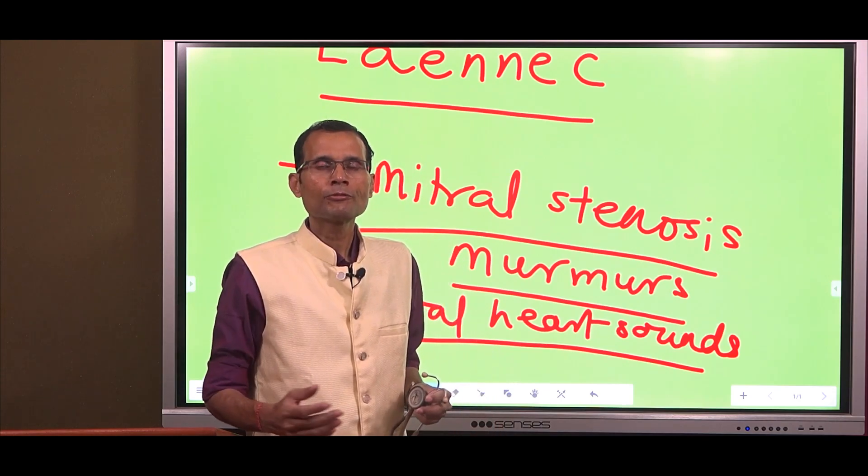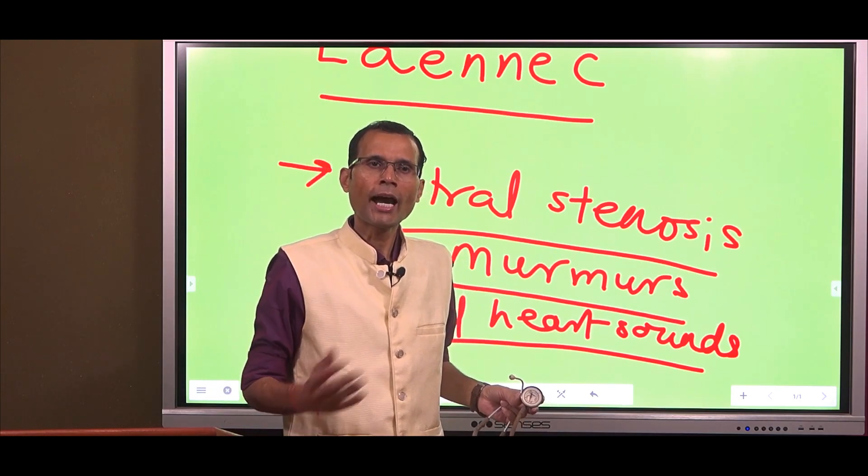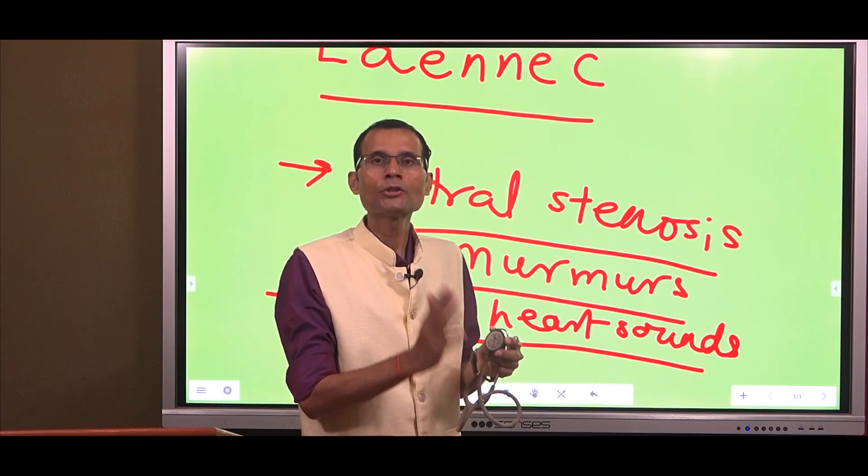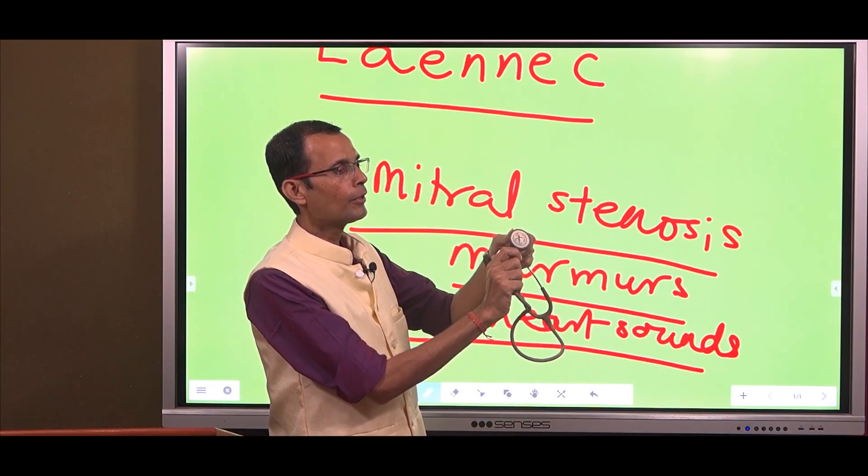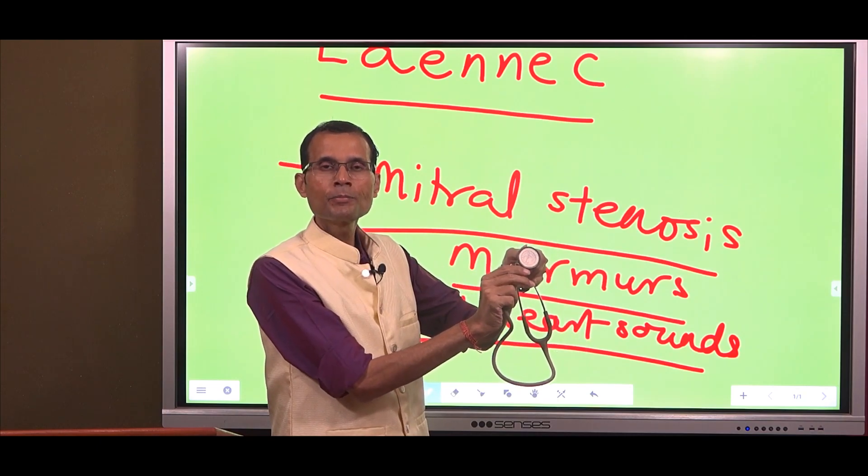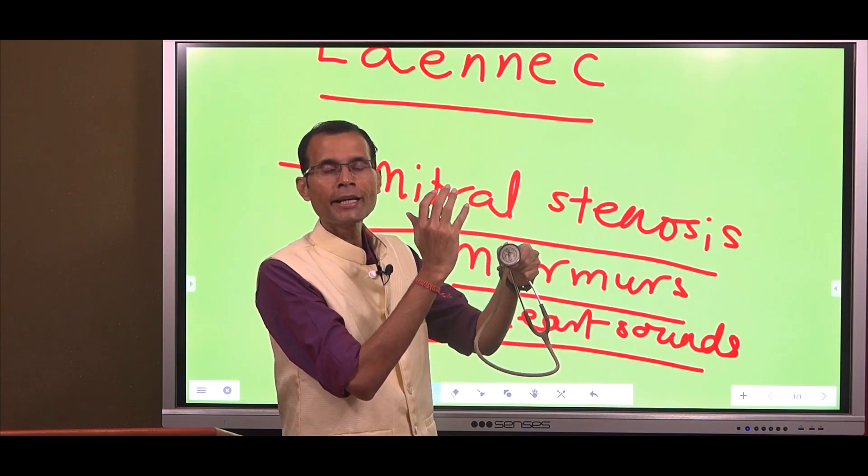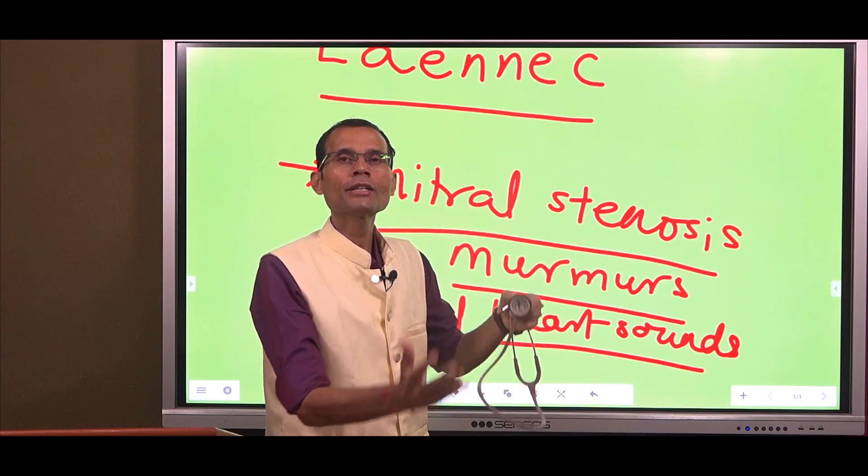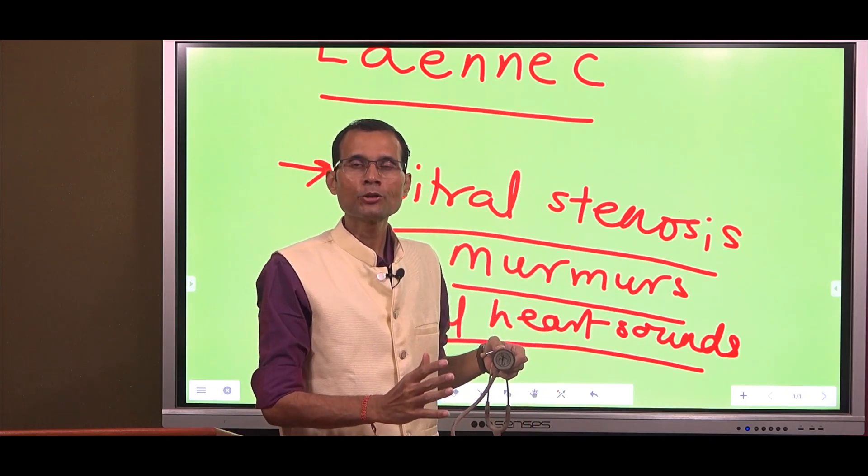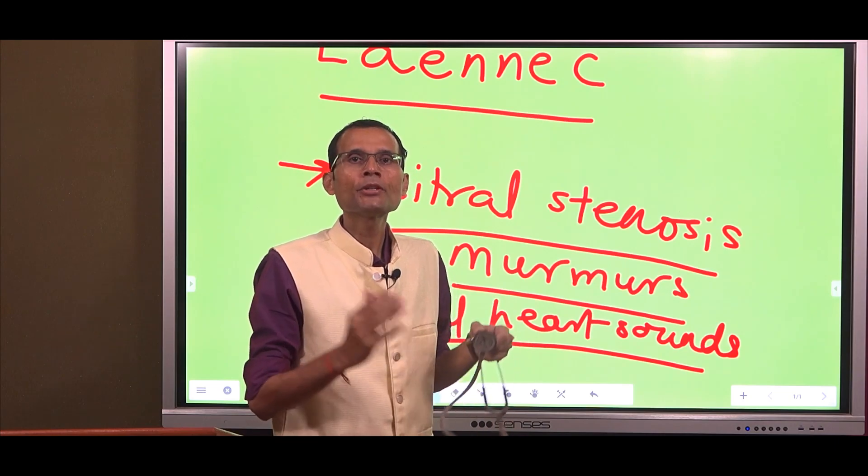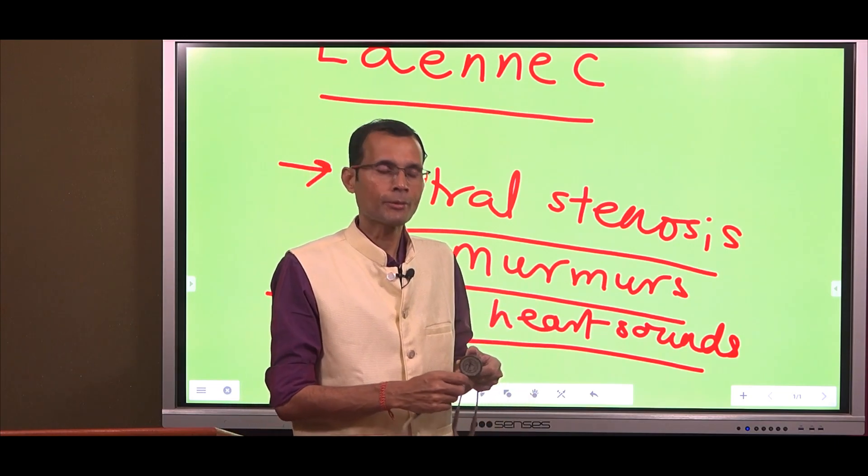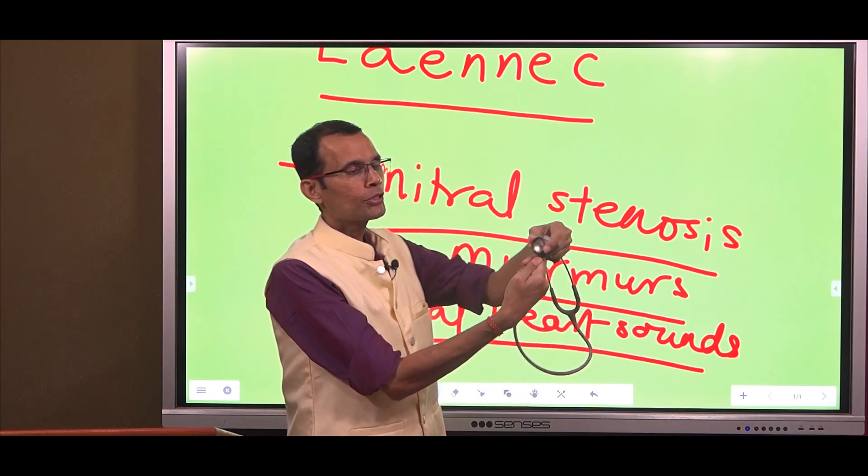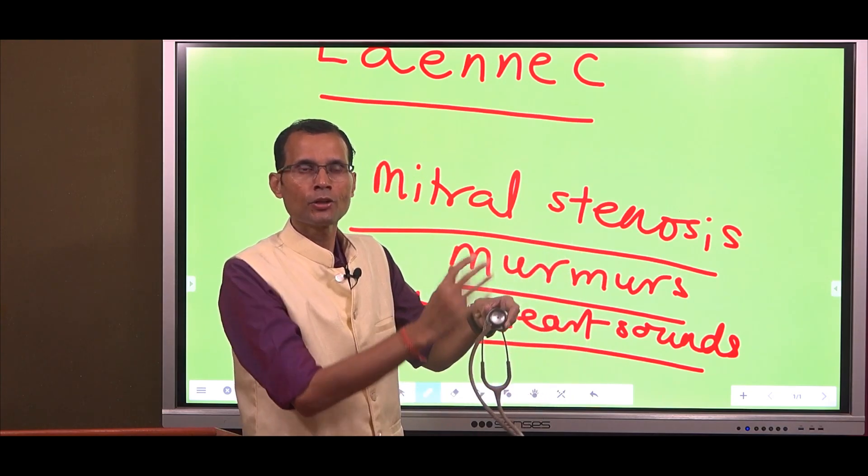Apart from that, for most other chest sounds and other sounds, we will use diaphragm. You can see there is a mechanism, a knob which you can rotate to connect either the bell or the diaphragm into effect. Both sides cannot be used simultaneously. You can either use bell or you can use diaphragm, and you use the knob for connecting either of them.